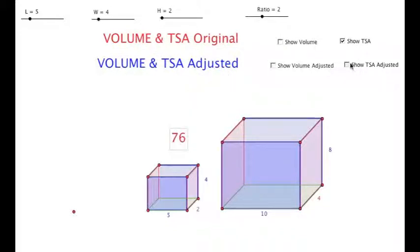The total surface area for the adjusted box was 304. If you divide these two, you'll find out that the ratio is 4, because area is a two-dimensional idea. We doubled all of the measurements for the area, and 2 times 2 is 4, so it's four times the total surface area.